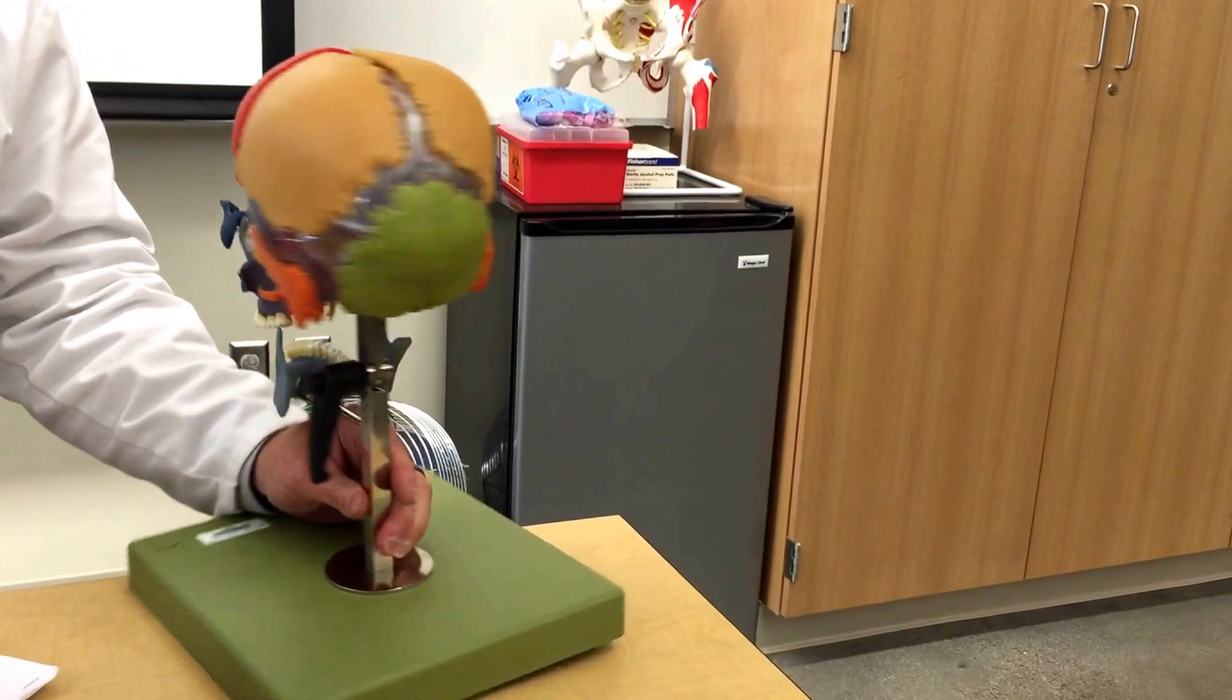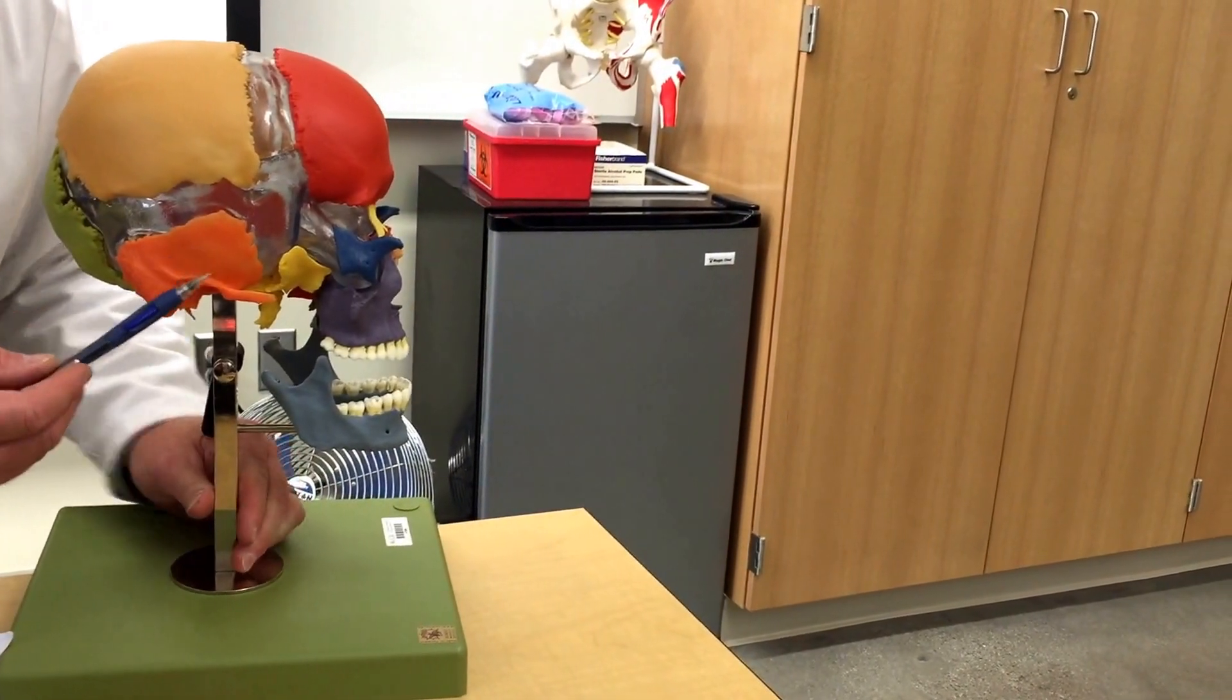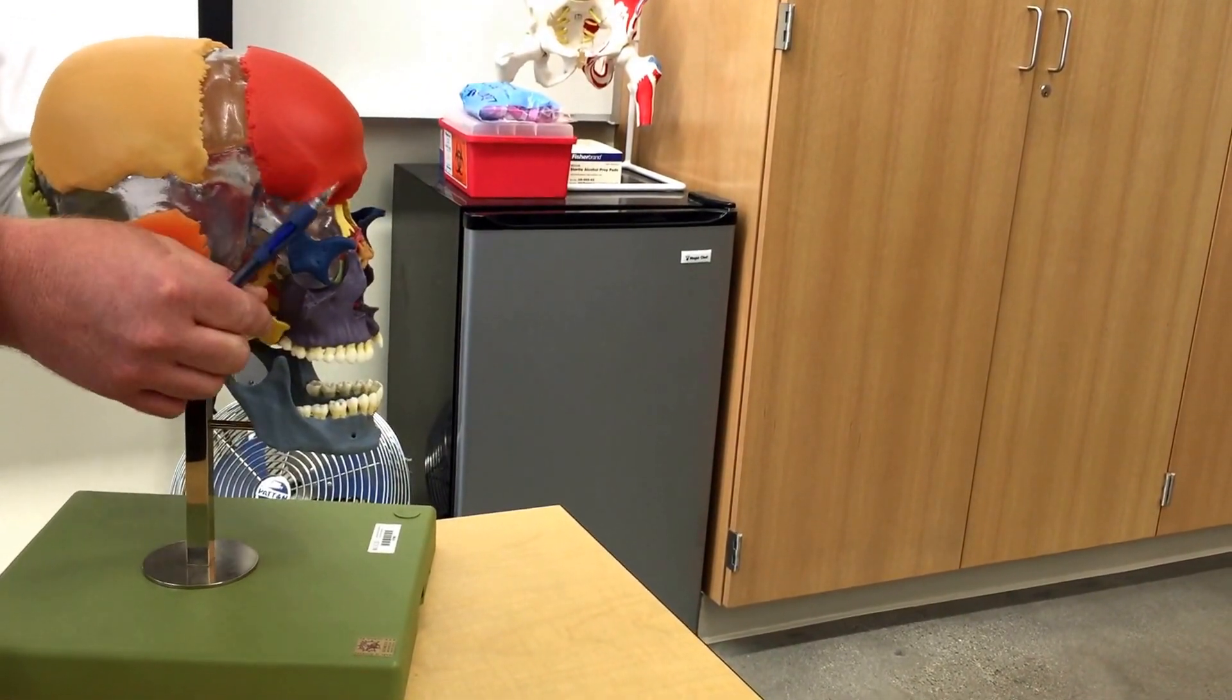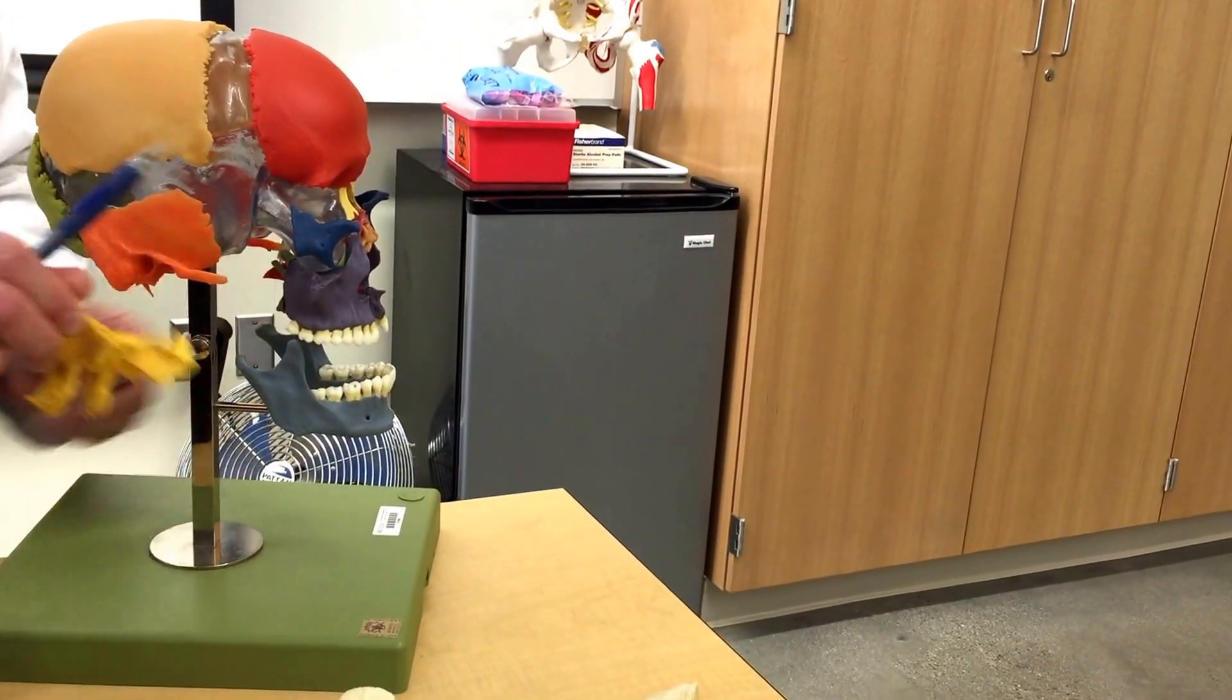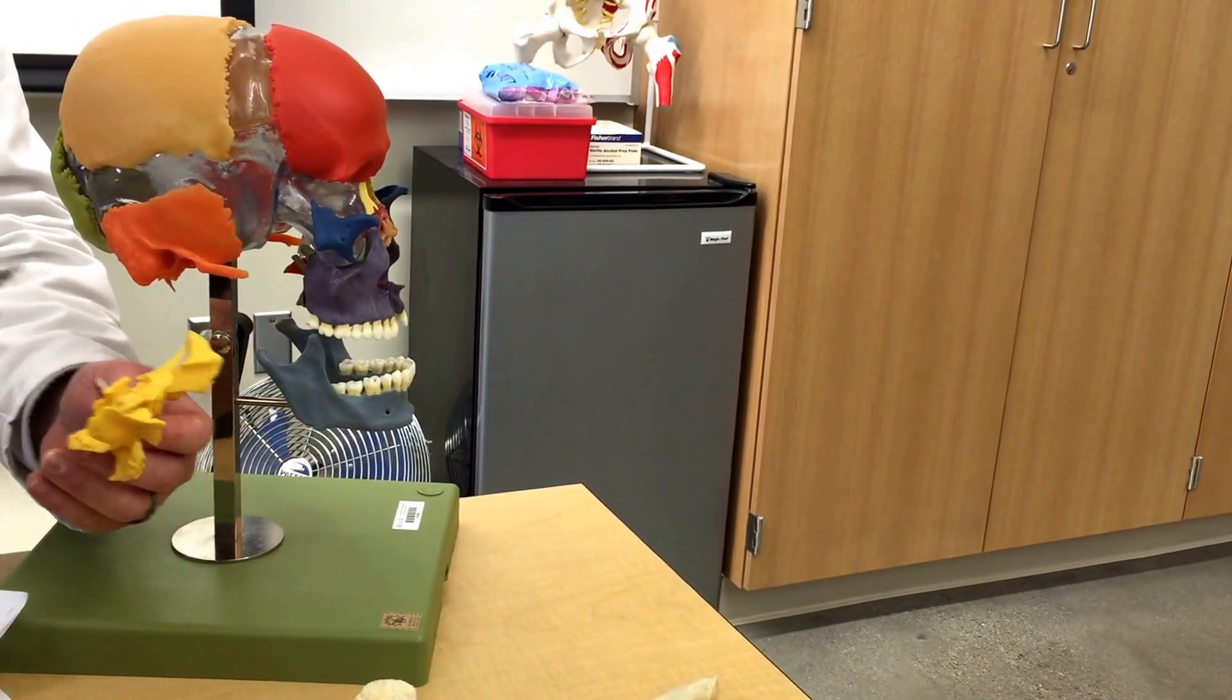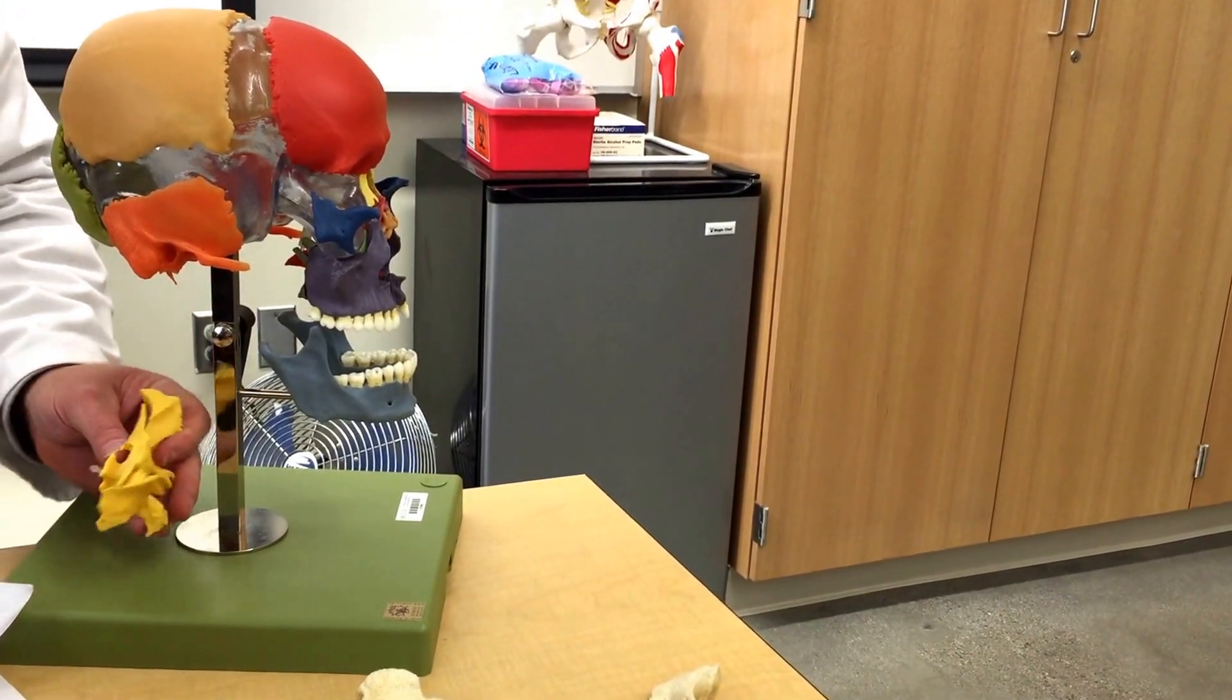As we continue around to this side, we're going to see in front of the temporal bone, we'll see the wings of this bone right here. This is the sphenoid bone. It's the keystone, all other bones connect to it in the cranium. So this winged bone is the sphenoid.